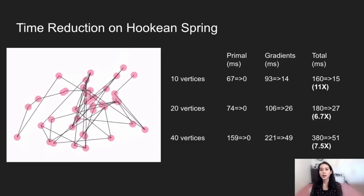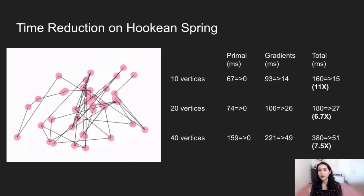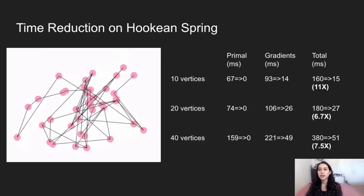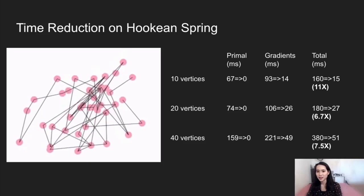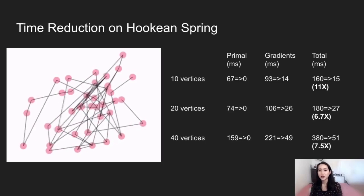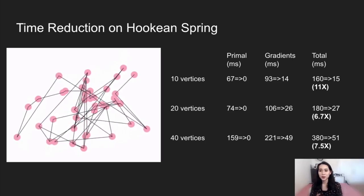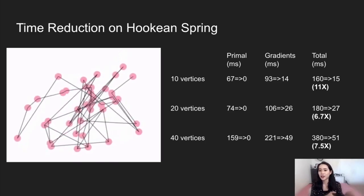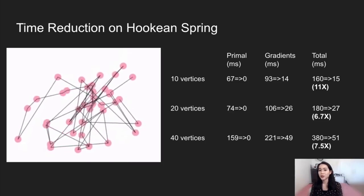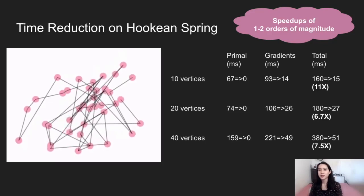Now let's take a look at a more complex example. This slide shows the performance of a physics simulation program that simulates mass-spring systems. The three configurations correspond to three sizes of the spring system: 10, 20, and 40 vertices. Coarsening is able to do symbolic differentiation on the entire gradient computation. As a result, the primal computation, which computes the system energy, can be completely removed — the primal time is reduced to zero. The speedups observed are 4 to 11x, and the program even runs faster than the original primal computation alone. We've also evaluated coarsening on other examples and observed speedups of one to two orders of magnitude.